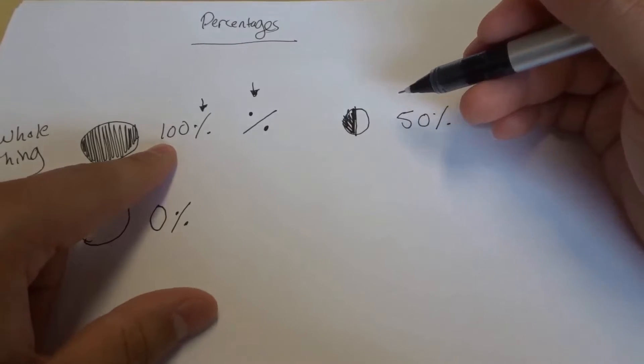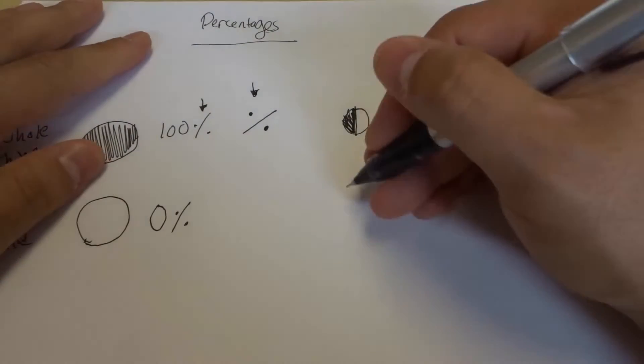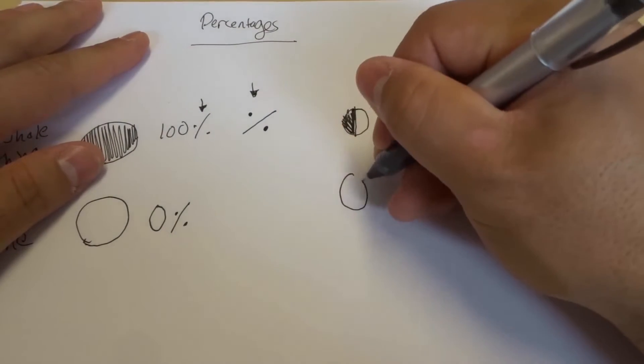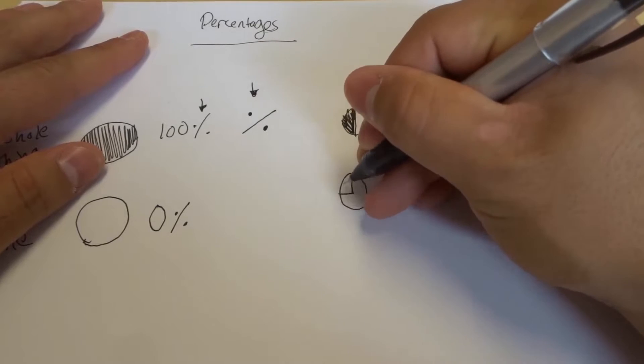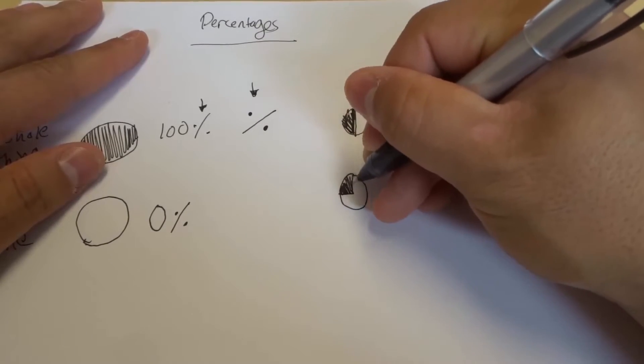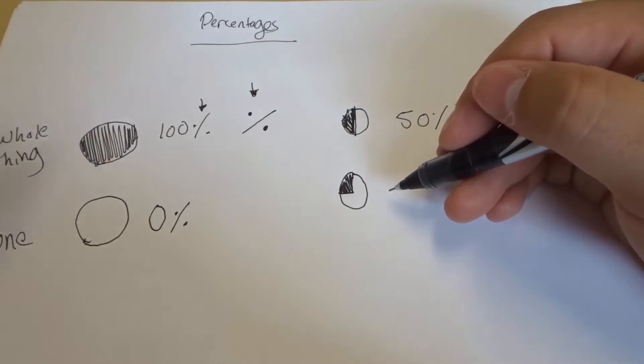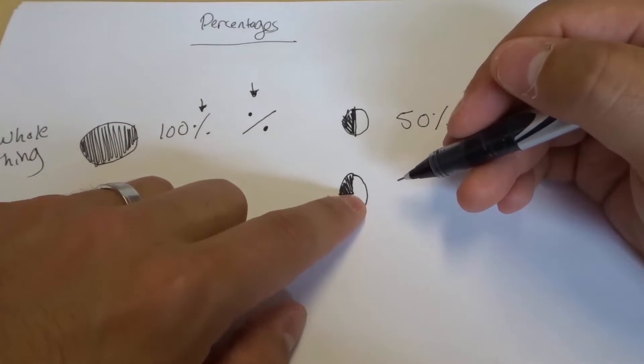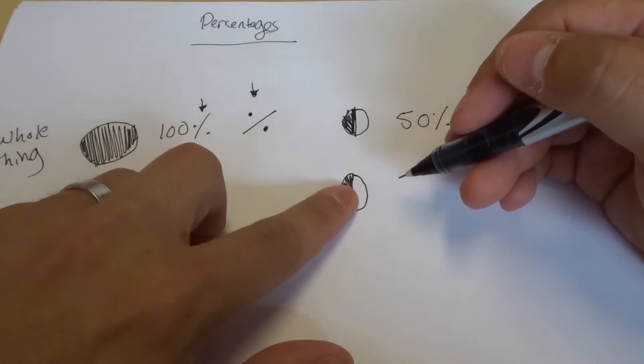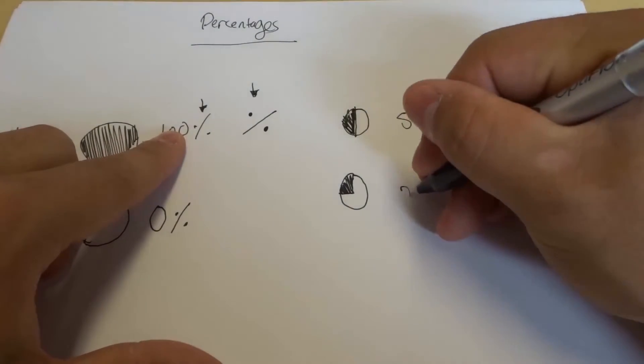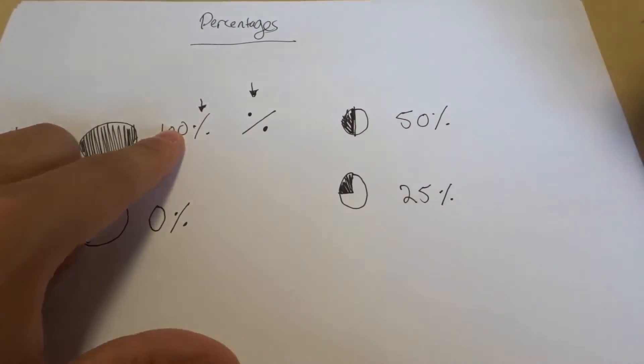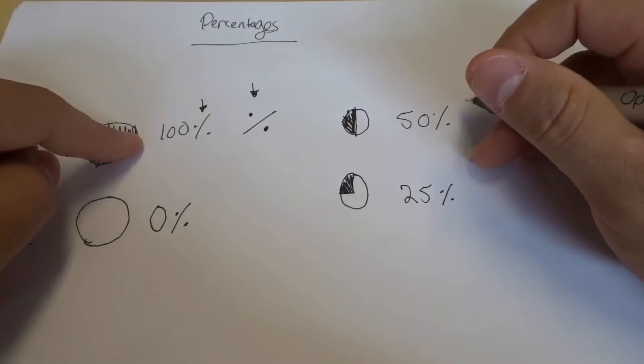Let's say that we have another pie over here, and we have one quarter of this pie. As you can see, we have one quarter. That means that we would have one quarter of the whole thing. One quarter of 100% would be 25%, because 25 is one quarter of 100.